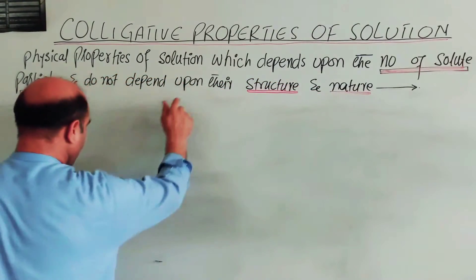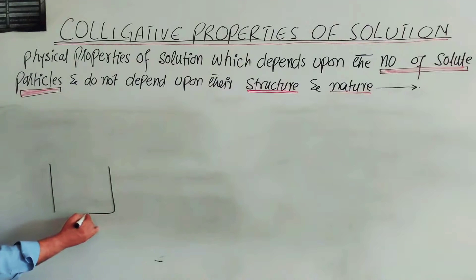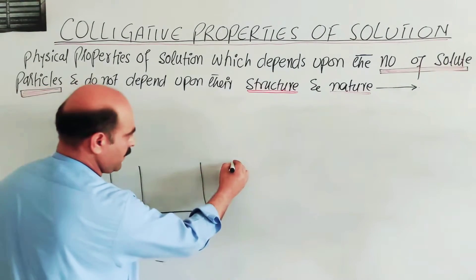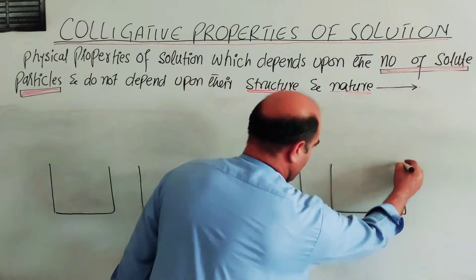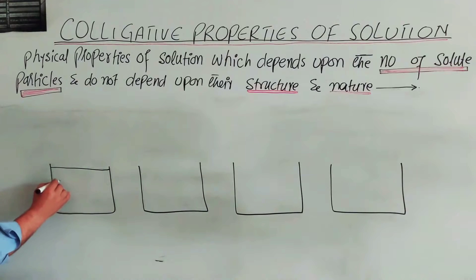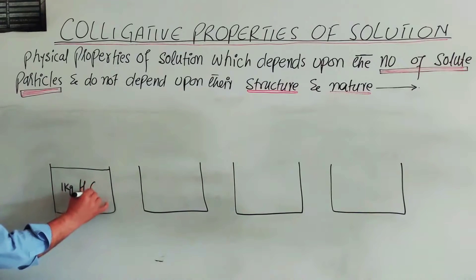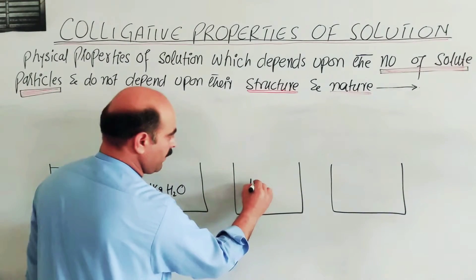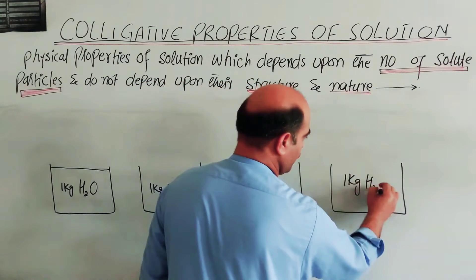Students, consider this example with containers. We have the first container, the second container, and the third container — and each container holds 1 kg of water.